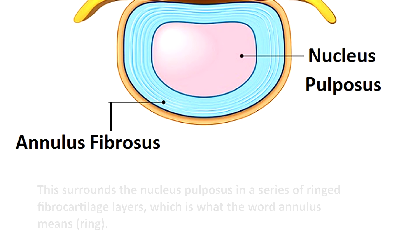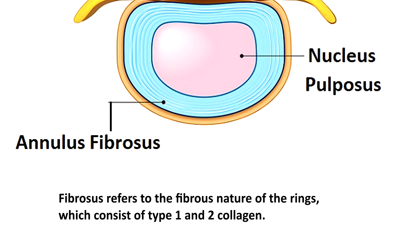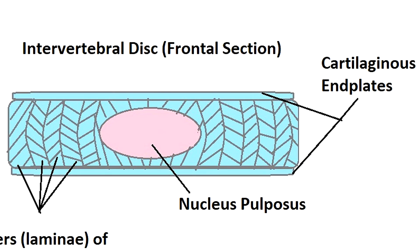The annulus fibrosus surrounds the nucleus pulposus in a series of ringed fibrocartilage layers — which is what annulus means: ring. The fibrosus refers to the fibrous nature of the rings, which consist of type 1 and type 2 collagen. Each ring layer has fibers arranged at an oblique angle that alternates with each ring, creating a crisscross pattern. These intervertebral discs are capped at the top and bottom with a thin cartilaginous end plate.